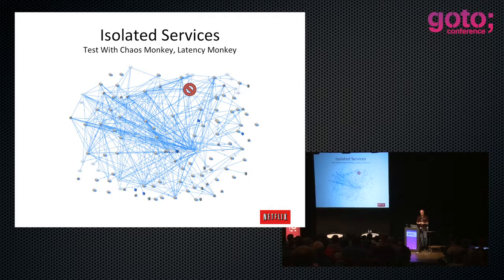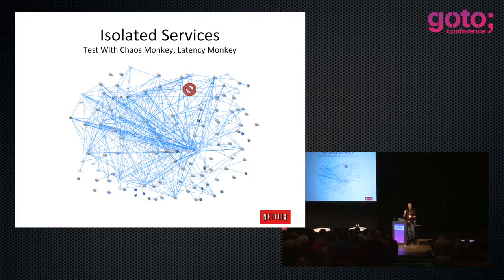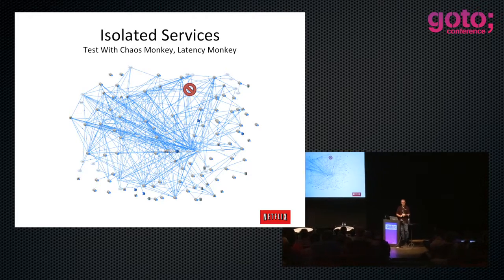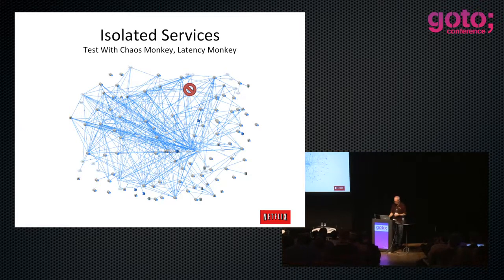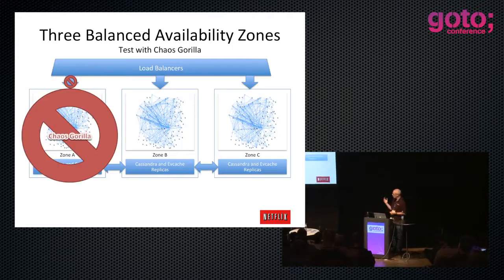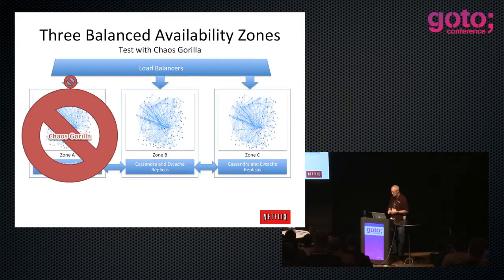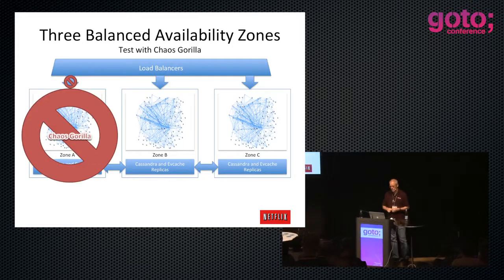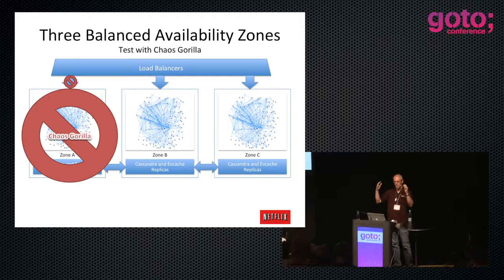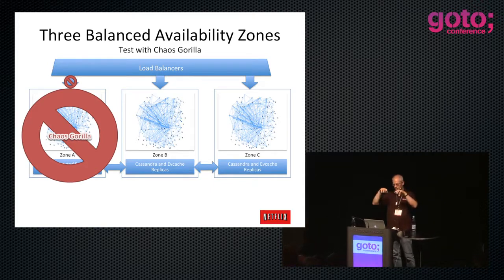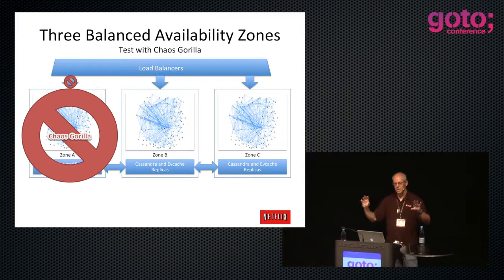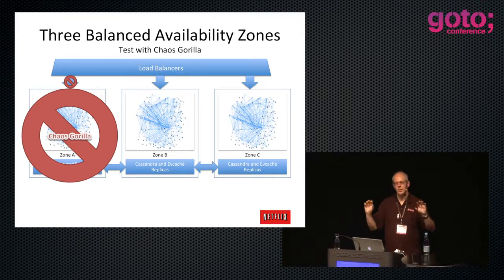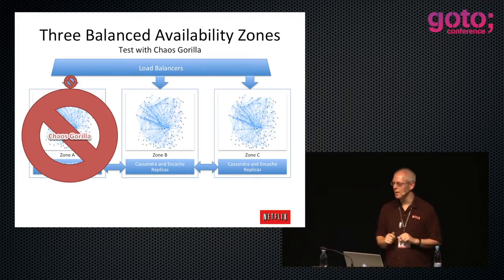We test that in production. We test the chaos monkey killing individual instances in production. We have three balanced availability zones - a load balancer at the top feeding traffic into zones A, B, and C, which are separate buildings about a millisecond apart - separate data centers within Amazon's environment. US East has five zones; Europe has three zones.